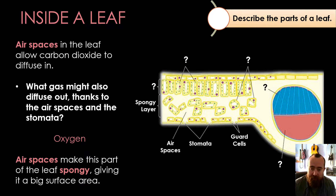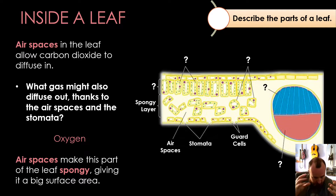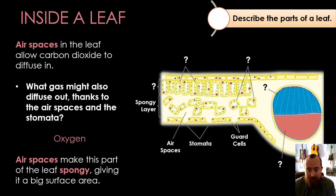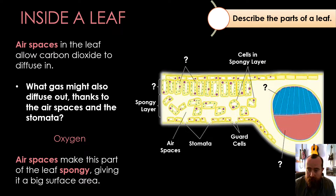The air spaces make this part of the leaf very spongy, so we call it the spongy layer. Like a household sponge, it's full of lots of little air spaces, meaning it can absorb a lot — similar to how a sponge absorbs water. In the leaf, the spongy layer has a lot of air spaces inside it, allowing a lot of oxygen to get out and a lot of carbon dioxide to get in. It also gives a really large surface area, with lots of space around the cells for gases to diffuse in and out.